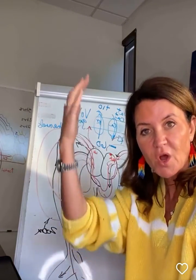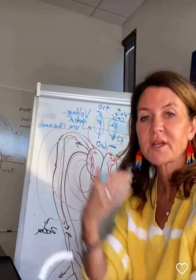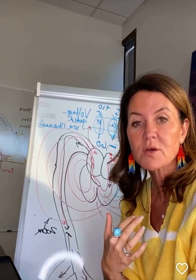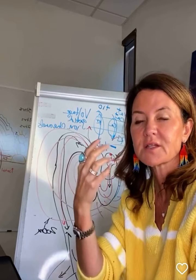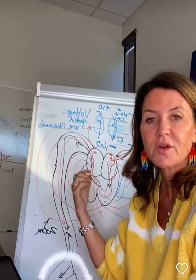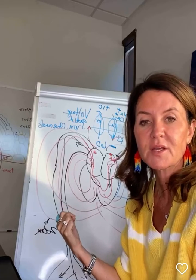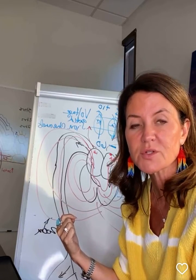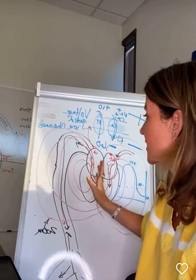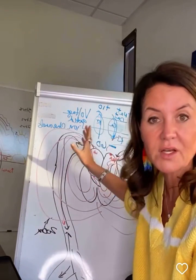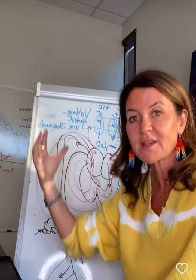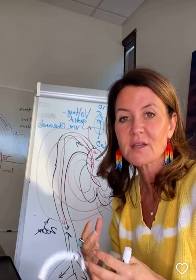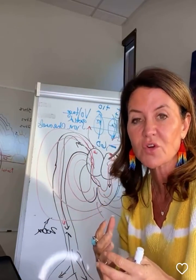The heart and the brain are connected. They're connected by hormones, by neurotransmitters, by nervous system impulses. They're connected because the brain also has its own electromagnetic field that can be detected outside of your head.